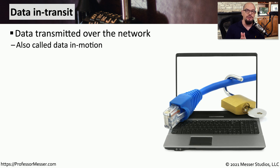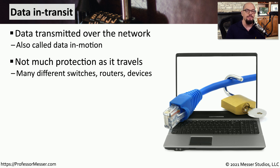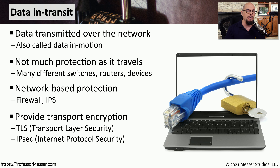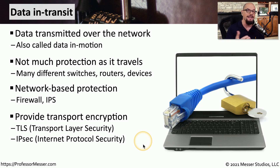Data that's moving across the network is referred to as data in transit, also called data in motion. This means data going between switch interfaces, router connections, and devices on the network. We will often allow or prevent access to this data using a firewall or intrusion prevention system. We might also encrypt the data as it goes through the network, meaning no one would be able to view or understand the information since it's being sent in ciphertext form. If you're using TLS — Transport Layer Security, the newer name for SSL — or IPsec (Internet Protocol Security), then you are encrypting this data in transit.